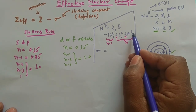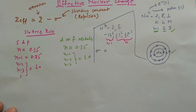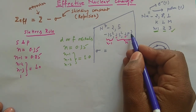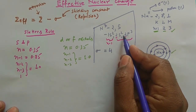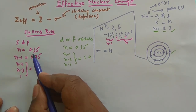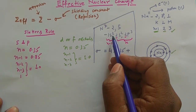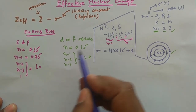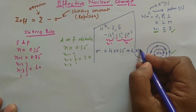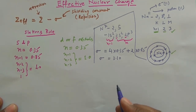Since we are calculating for one of the 2p electrons, that electron is our reference electron and must be excluded from the count. Five electrons are present in the n shell (2s² 2p³), but we exclude the reference electron, leaving four. So σ = 4 × 0.35 (for the remaining n shell S and P electrons) + 2 × 0.85 (for the two electrons in the n−1 shell, i.e., 1s²). This gives σ = 1.40 + 1.70 = 3.10.